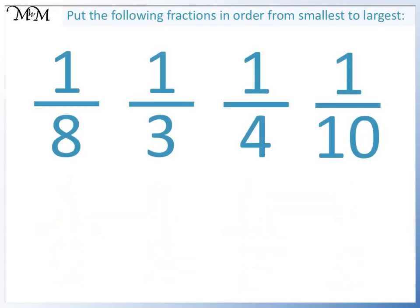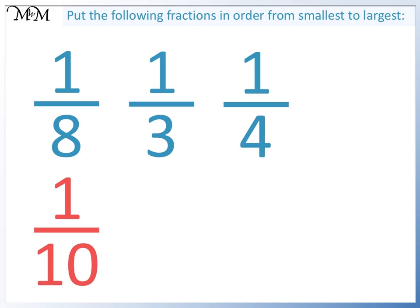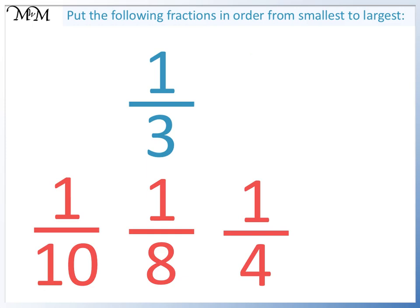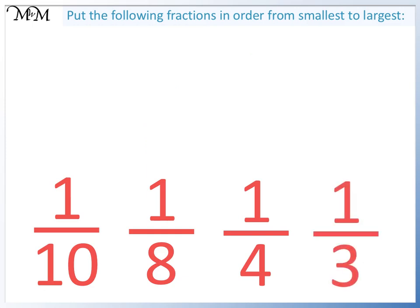We will now put these fractions in order from smallest to largest. We have one tenth, one eighth, one quarter, one third. One tenth is smallest, one third is largest.